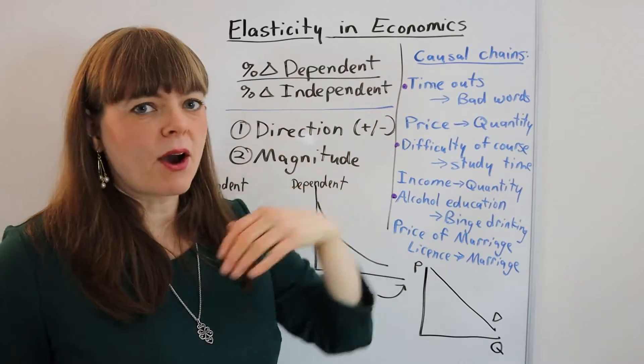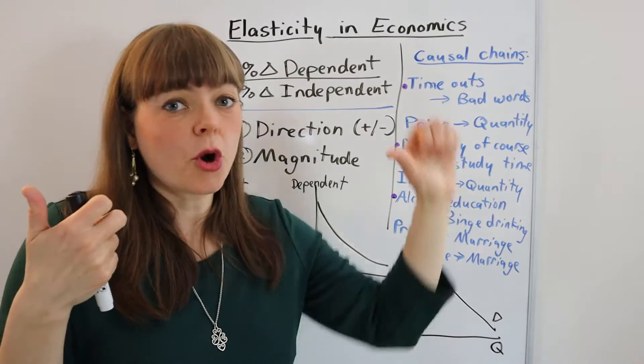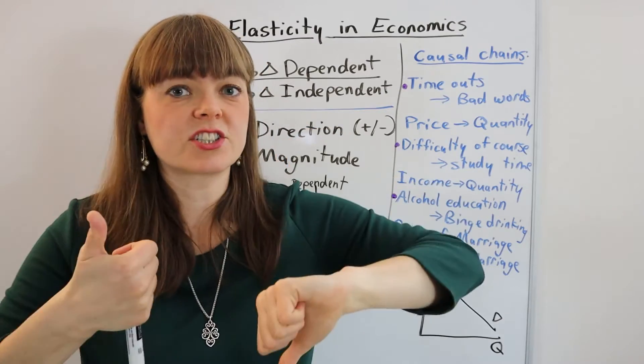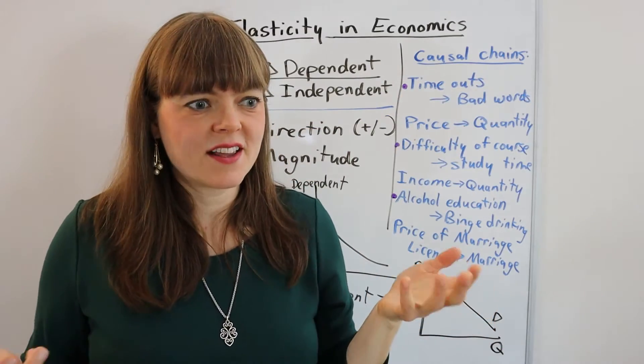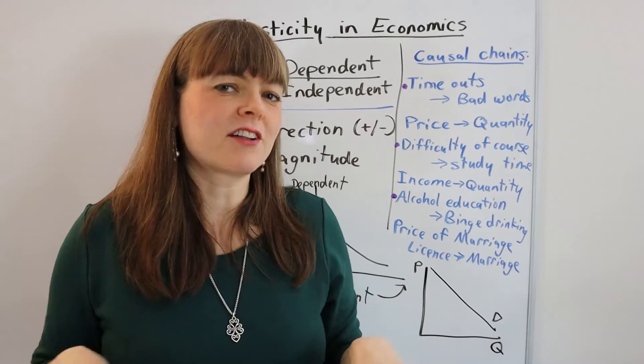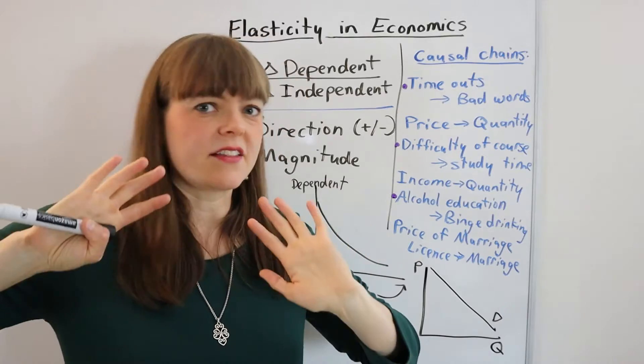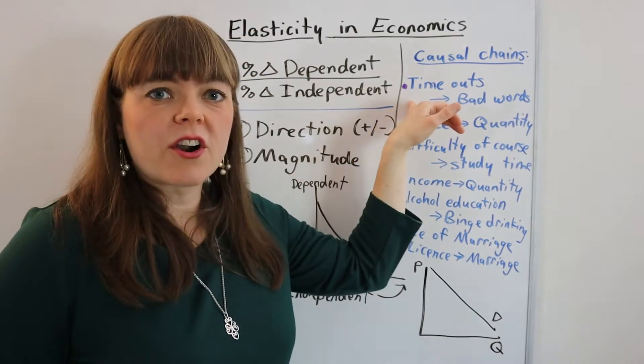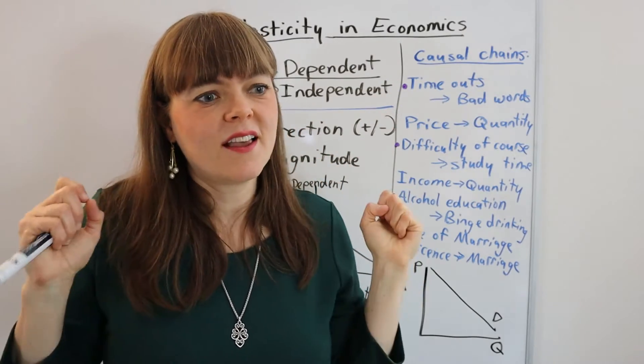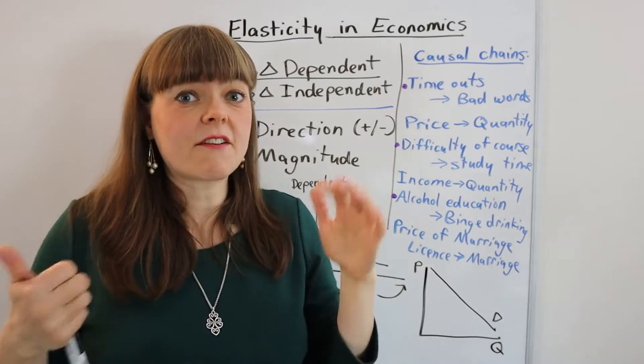So with the timeout example, when you increase the number of timeouts that you give your child, you're hoping that will decrease the bad words they say. So you're hoping that it is a negative relationship between these two things. Now how well does that work? Does the first two timeouts stop the child from ever using bad words? Is it fairly responsive? Or is this a fairly ineffective independent variable where you do a ton of timeouts and the child still does roughly the same amount of bad words, in which case it's not very responsive.